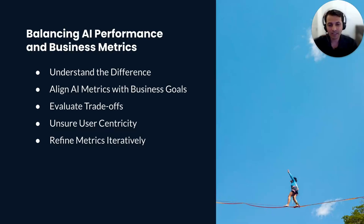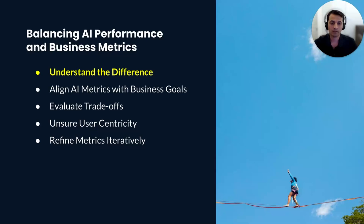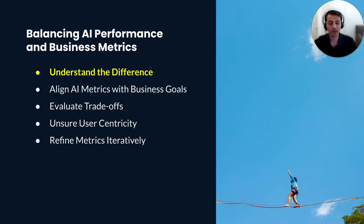As a great product manager, we should consider both AI-specific and business metrics. While AI-specific metrics give insight into model performance, business metrics tell you how the model is impacting the business. Business metrics like user engagement, churn rate, and conversion rate are key performance indicators (KPIs) that show how well the product is meeting business objectives.